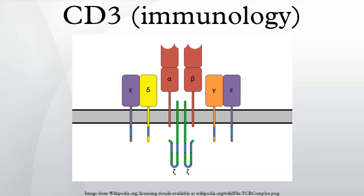Phosphorylation of the ITAM on CD3 renders the CD3 chain capable of binding an enzyme called ZAP70, a kinase that is important in the signaling cascade of the T-cell.